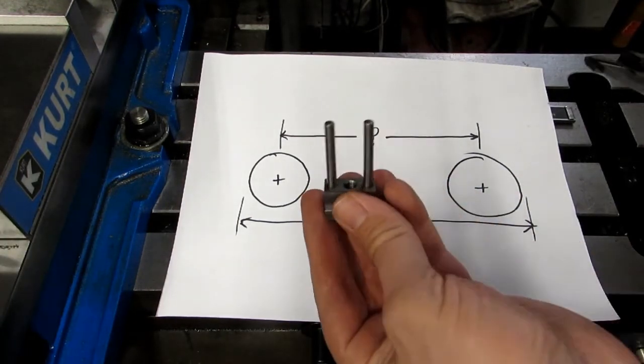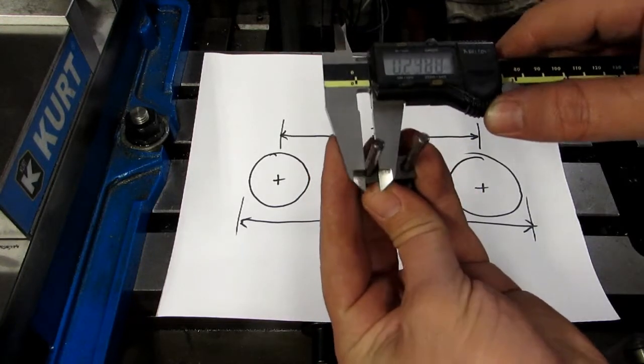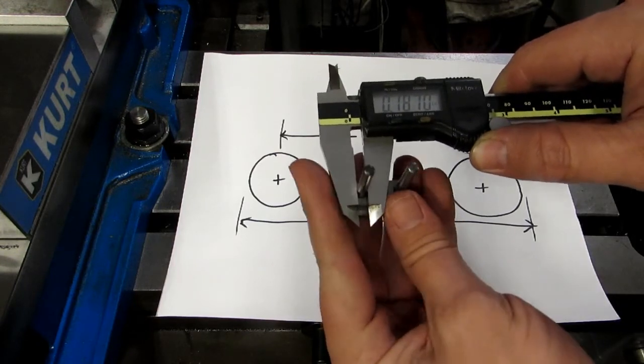So if we look at it practically, here I've got a vice stop with a couple of pins in it, and we can measure the size of our pins there. These are 3/16th pins.